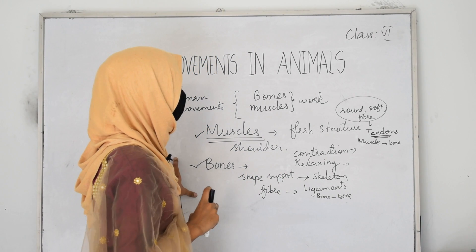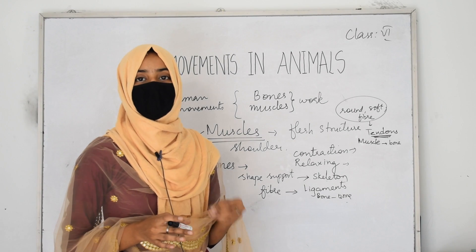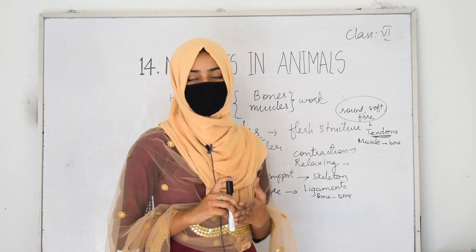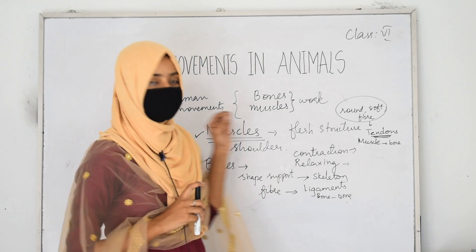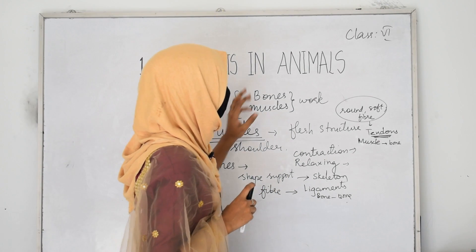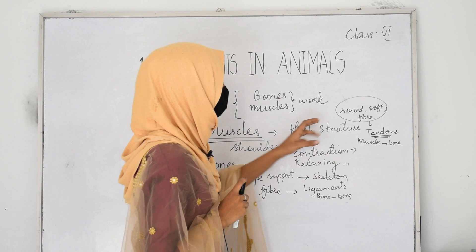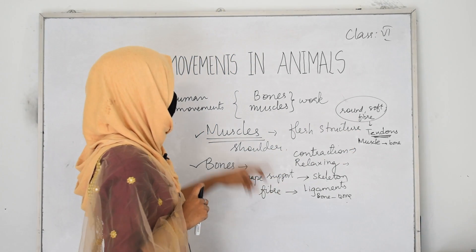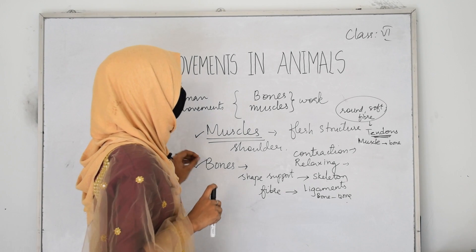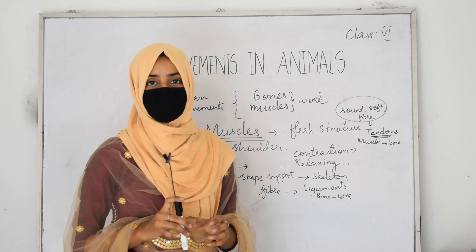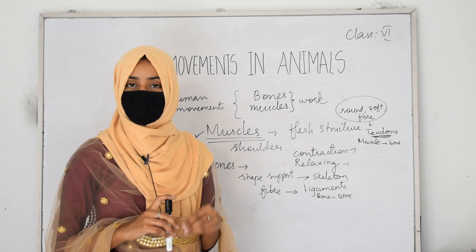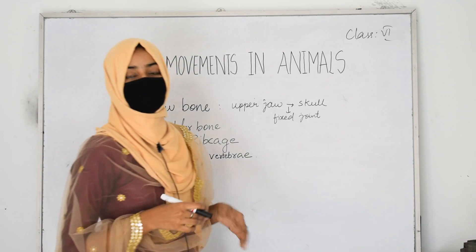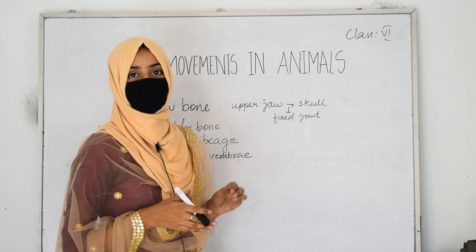Bones and muscles show movement of different body parts because of the presence of materials that join them — called tendons and ligaments. Bones and muscles are coordinated in such a way that they help in showing the movement of different body parts in our body. Now we are going to discuss the different types of bones present in our body.